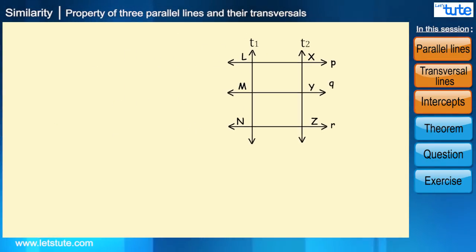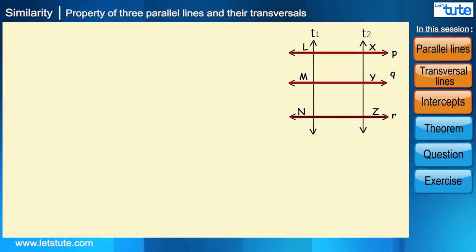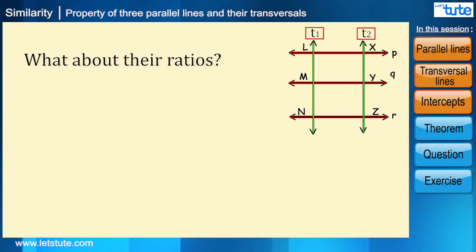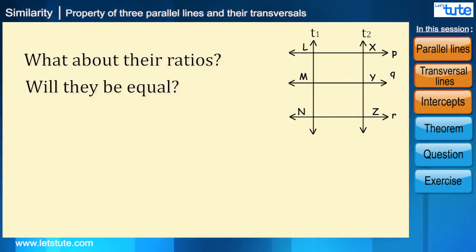Now if we take these three parallel lines, intercepts on transversal t1 and t2, can we find any relation between them? What about their ratios? Will they be equal? That is, LM divided by MN equal to XY divided by YZ? Yes we can, as it is at an equidistance point on transversal lines.